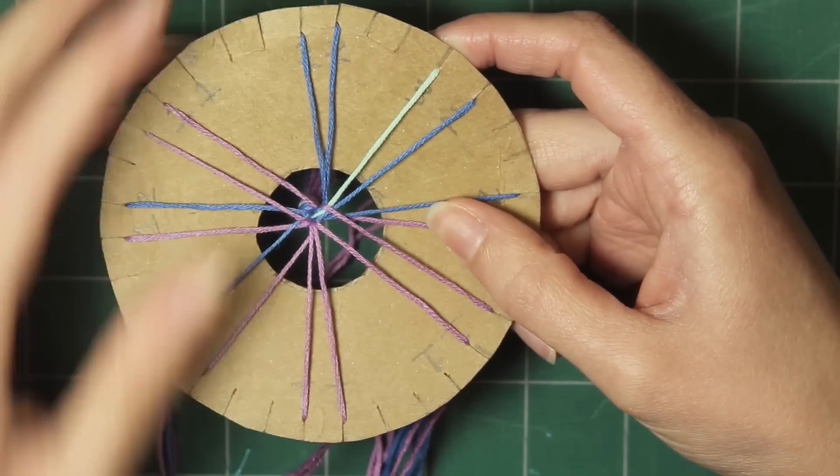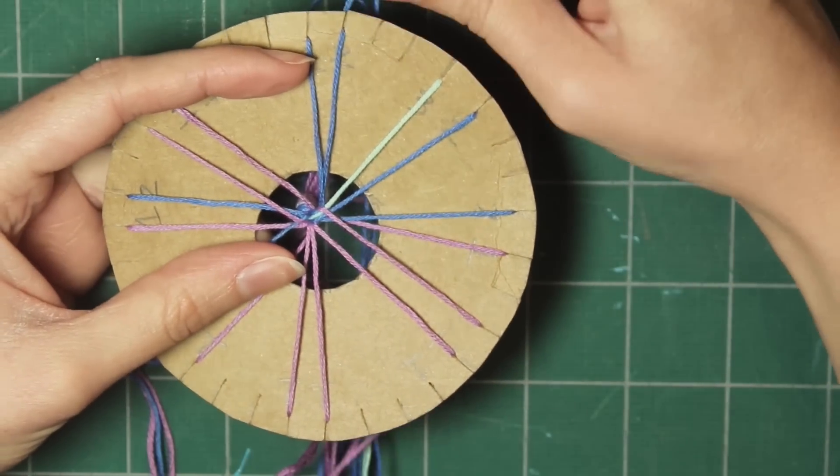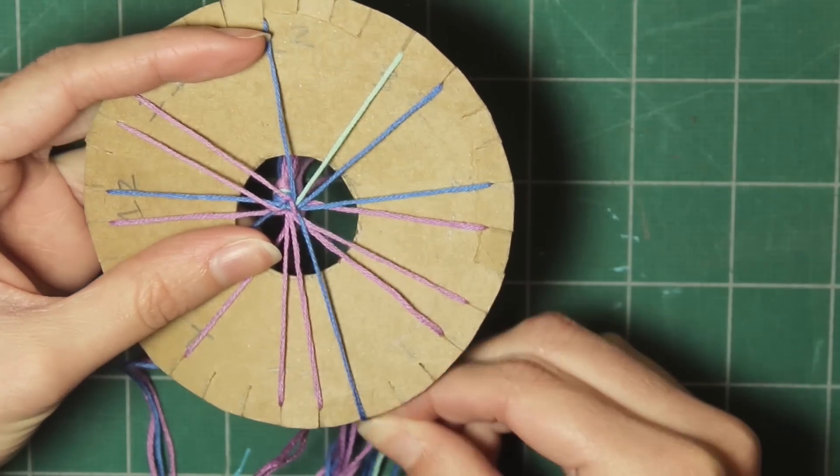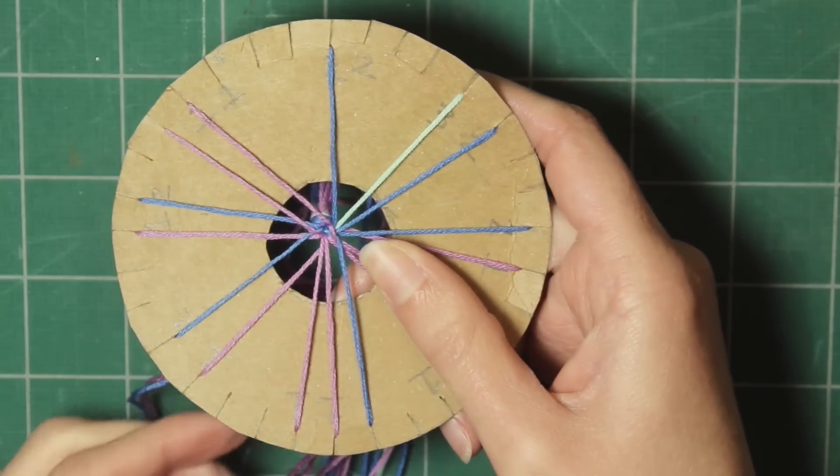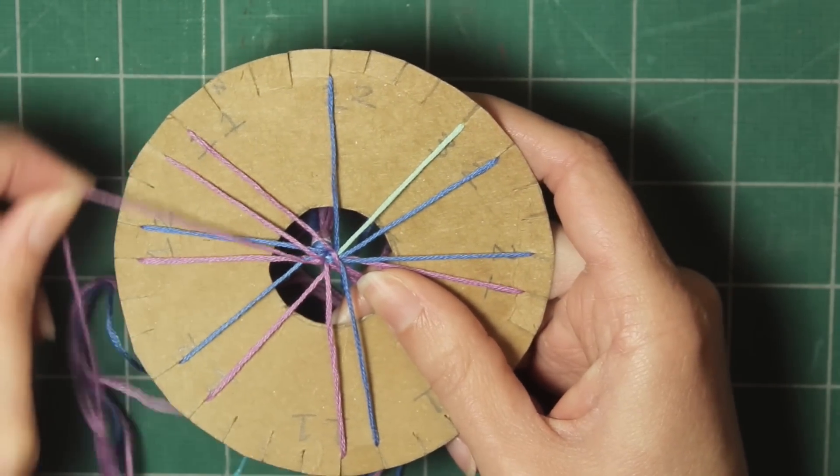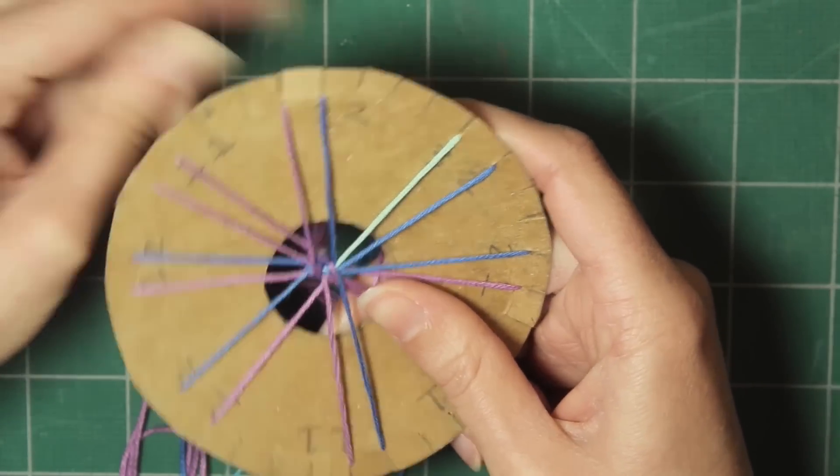Then turn the wheel so the next pair is at the top. Take the right strand, move it clockwise just to the right of the bottom pair. Pick up the left strand, move it clockwise just to the left of the top strand.